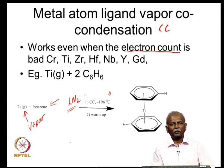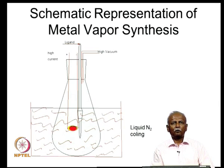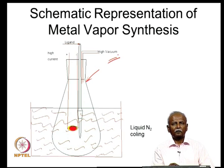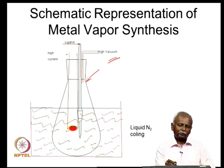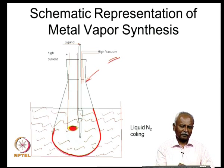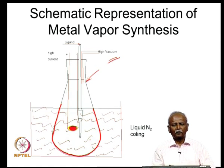One slowly warms up the reaction mixture and ends up with very nice sandwich complexes. The whole reaction vessel is kept under very high vacuum. At that temperature and under high vacuum, you pass the ligand so that it coats the sides of the vessel as a very thin film at liquid nitrogen temperature. Then, if you resistively heat a metal like chromium, you tend to have vaporization of the metal, and this vapor lodges itself in the sides of the vessel.